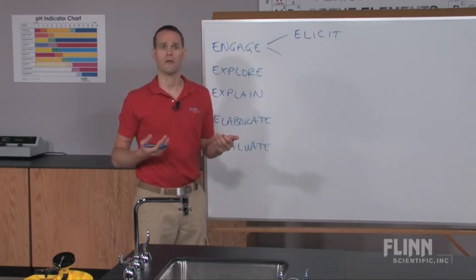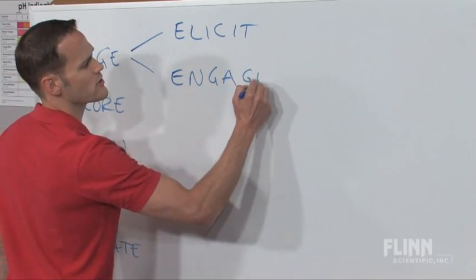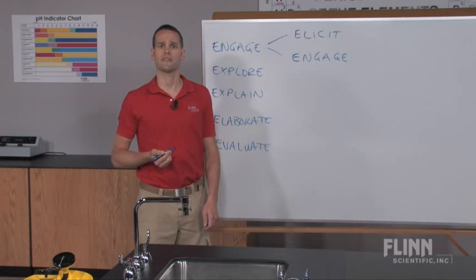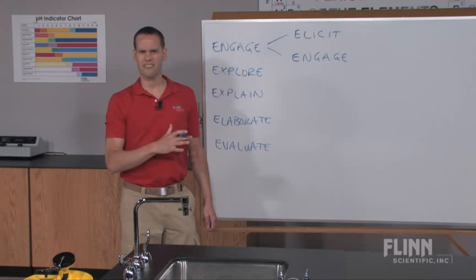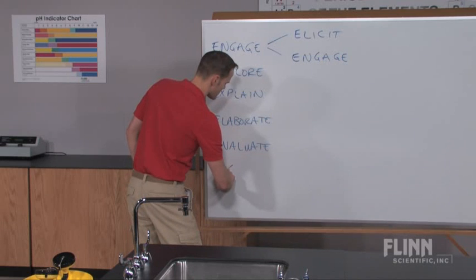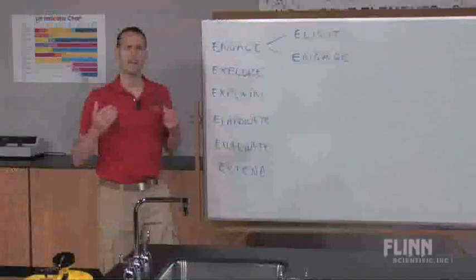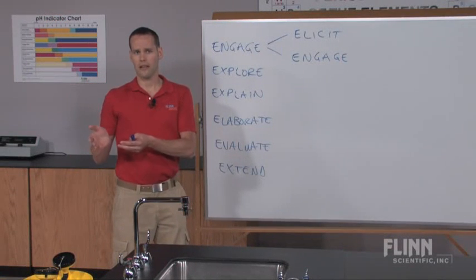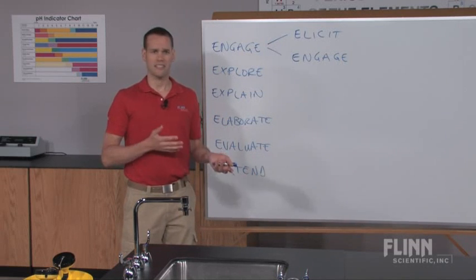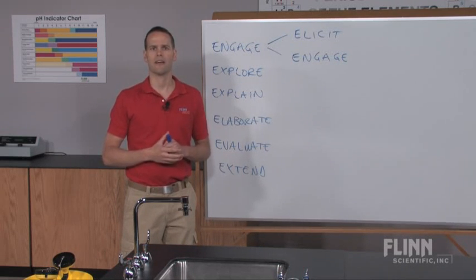You also find out where you might need to fill in more information. The elicit step then leads into engagement — something like a phenomena observation to get students interested in the upcoming activity. At the end of the 7E cycle, they added an extension step. Getting students to transfer knowledge from the classroom into new contexts is one of the bigger challenges in science classrooms, and it's really not very automatic for students.